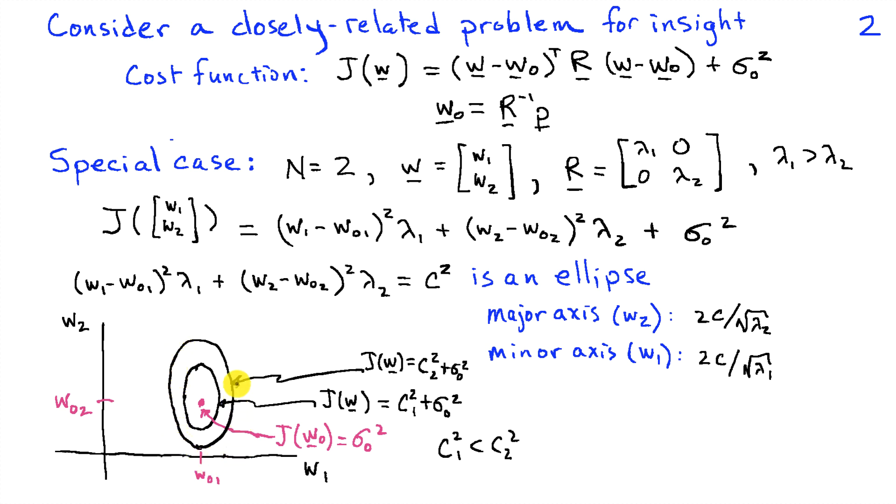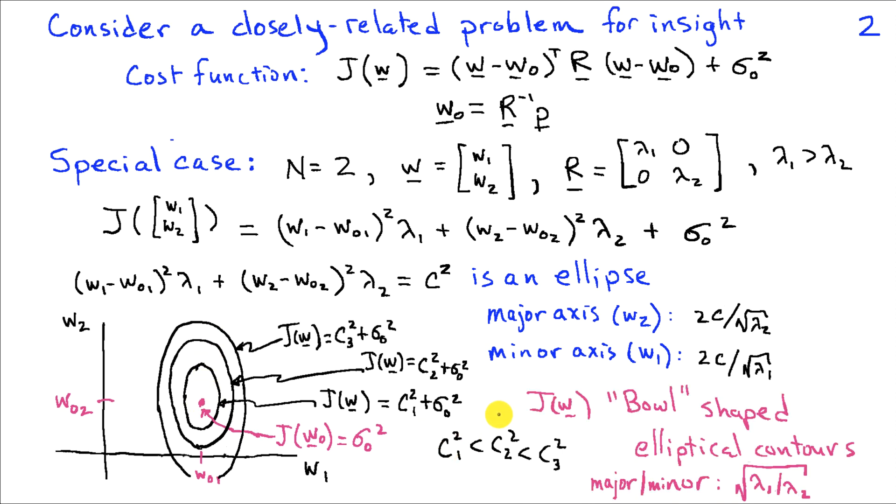This represents a point higher up on the cost function. So what we have here is a bowl, where the bottom of the bowl is the optimum solution, and then the sides of the bowl go up from there, and they get steeper in the W1 direction faster than they do in the W2 direction.